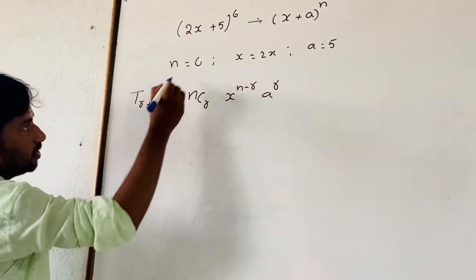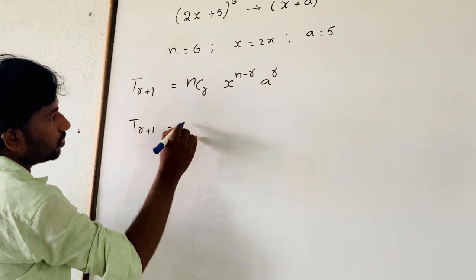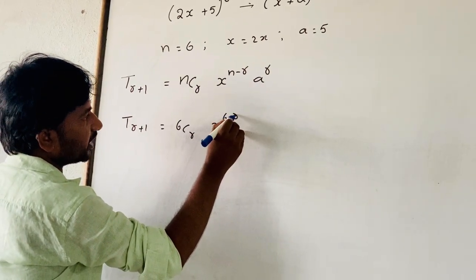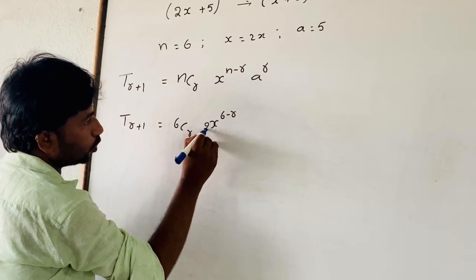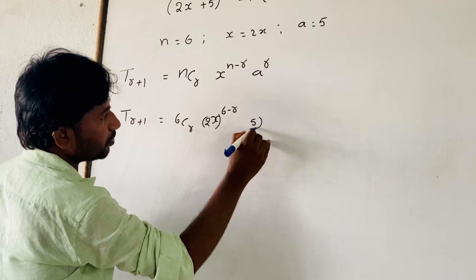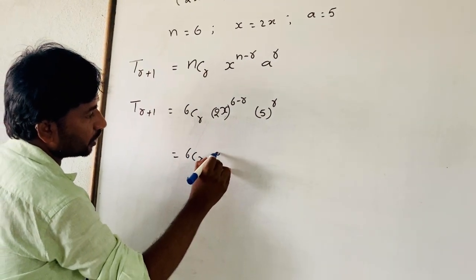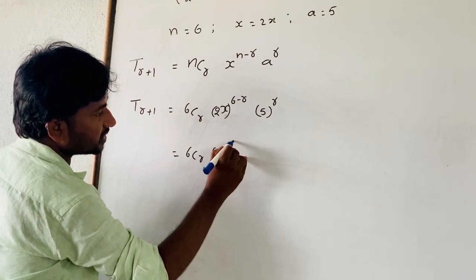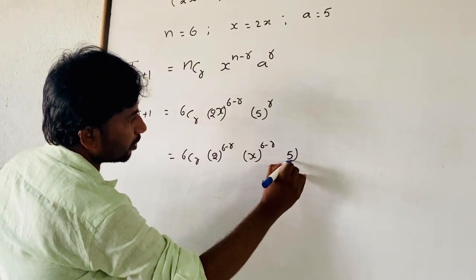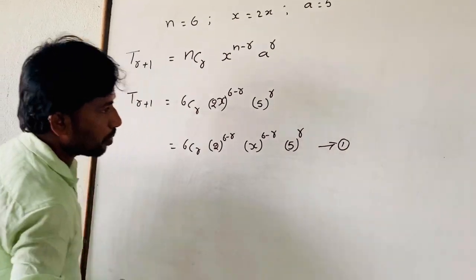Replacing with the values, T(r+1) is equal to 6Cr times (2x)^(6-r) times 5^r. That is equal to 6Cr times 2^(6-r) times x^(6-r) times 5^r. This is equation 1.